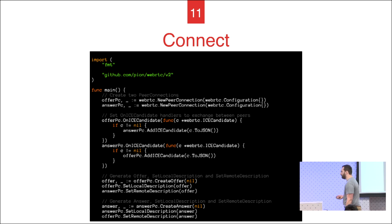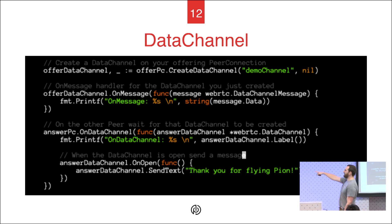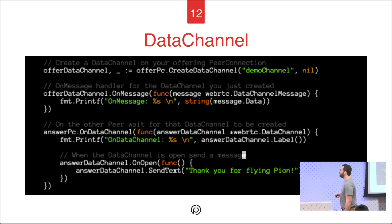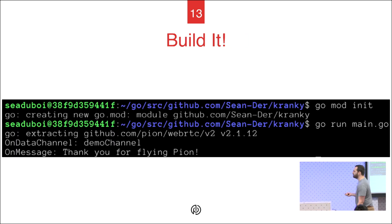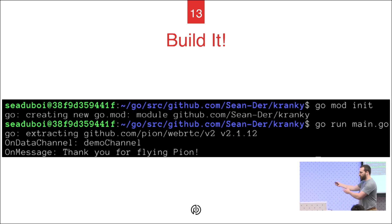Here's an example Pion application. If you've done any WebRTC before, you create two peer connections, set your on ice candidate, and create your offer and answer. The offering side creates a data channel; the answering side, when it gets a data channel, prints it and sends a message back. So we have, in the same process, two peer connections talking to each other via data channels. To build it, all it takes is go mod init, go run — it downloads from GitHub, and you have a full application printing out the data channels open. Thank you for flying Pion.